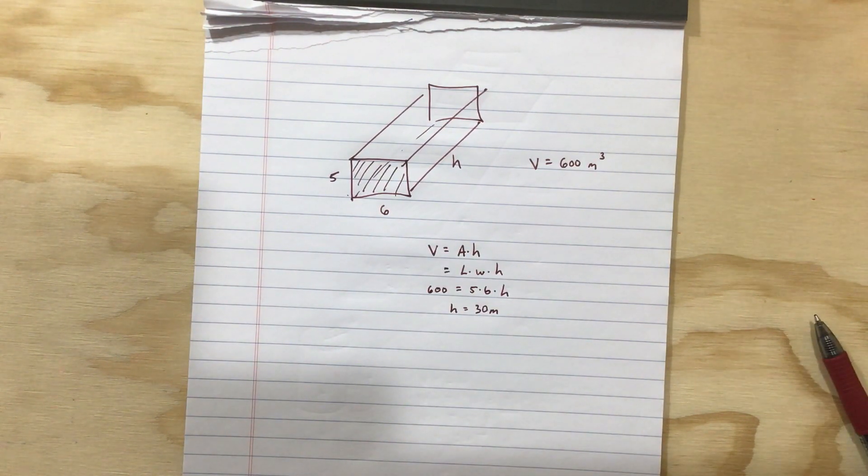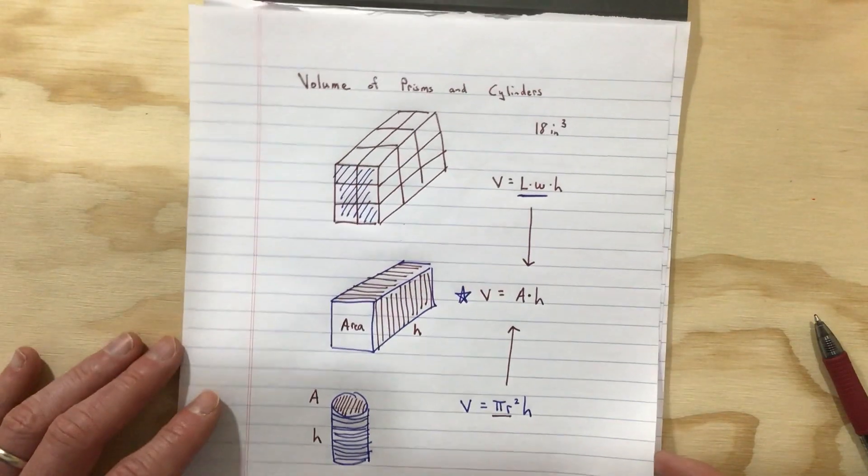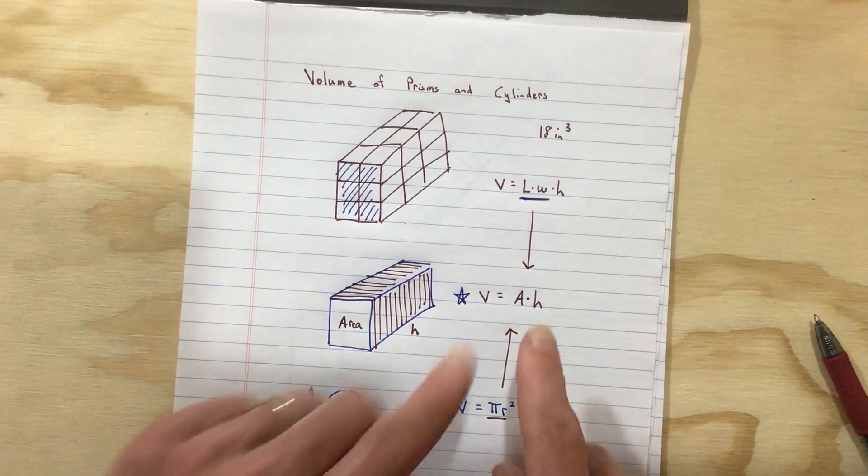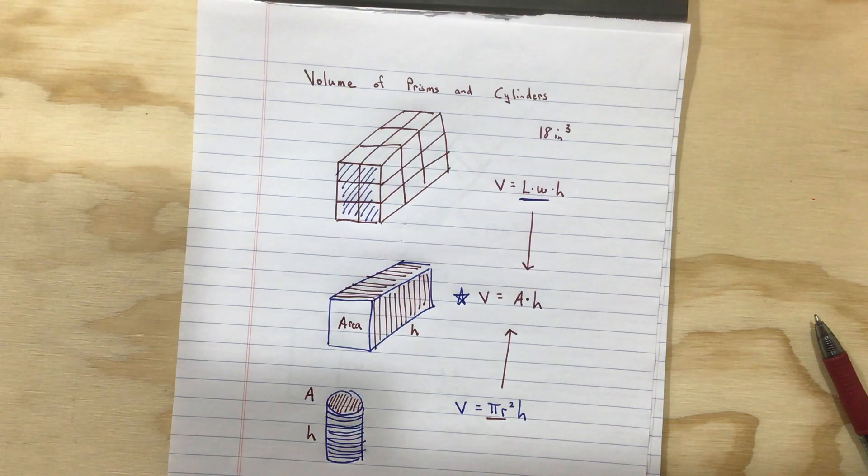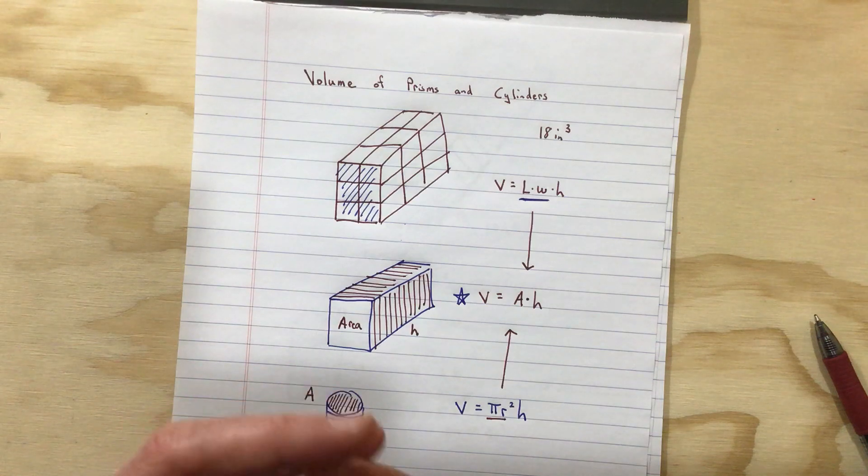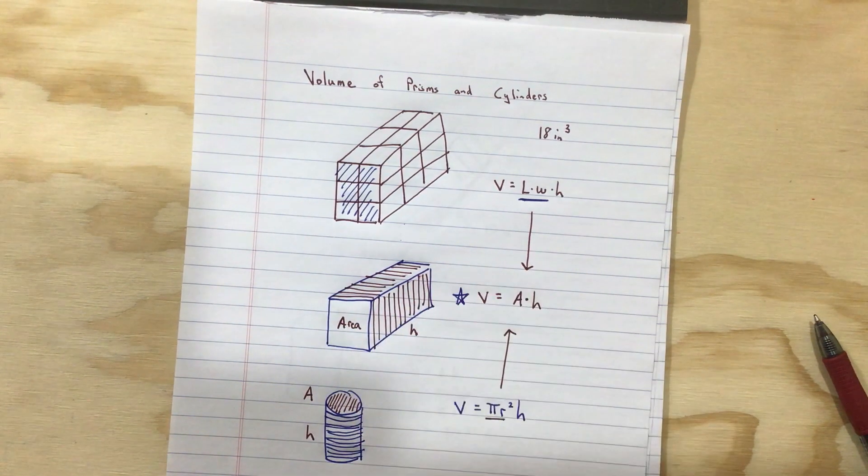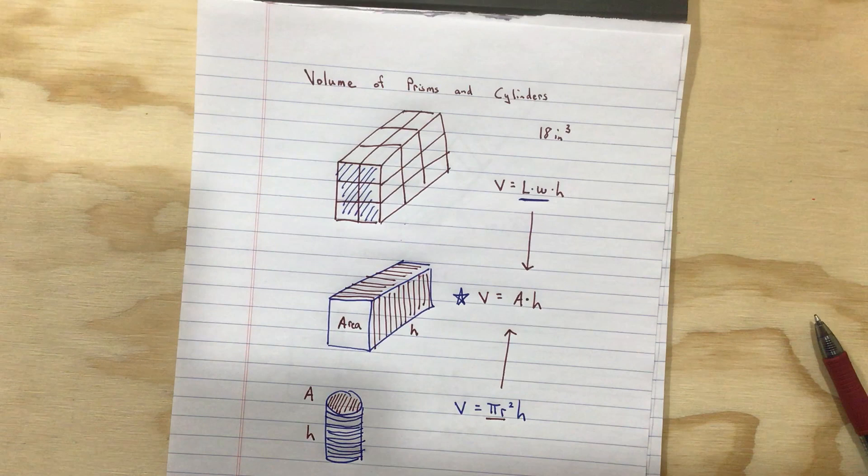Hopefully this gets you started on finding the volume of cylinders and prisms and reminds you of this huge concept that this is really an upper-level type idea of a stacking principle - that the volume, we can take the cross-sectional area of something, and we can multiply by the depth to get the volume.